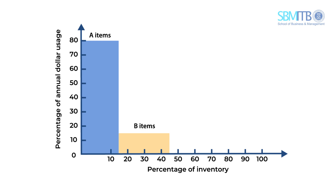Products classified in class C are products that have a low annual dollar volume. Those products represent only 5% of the total dollar usage, but represent 55% of the total inventory items.